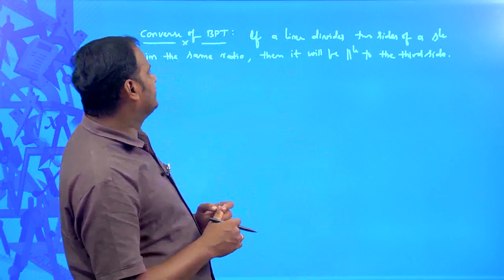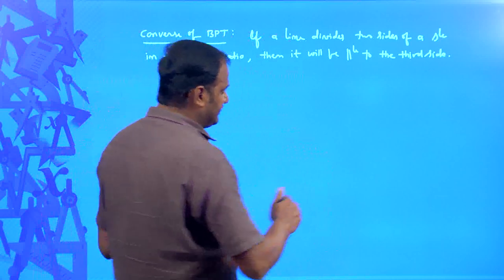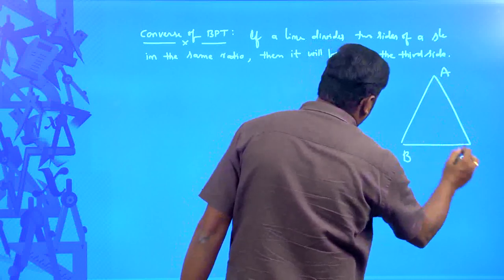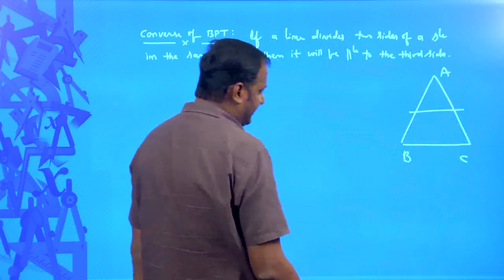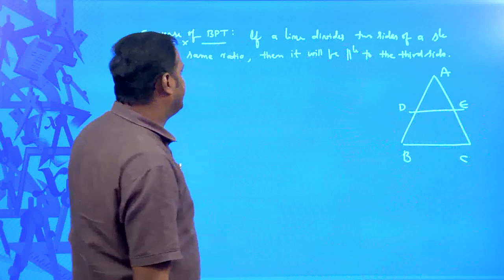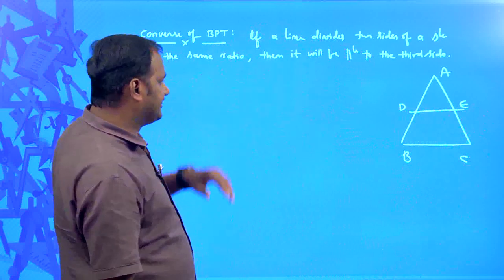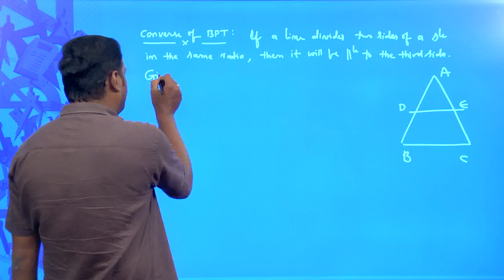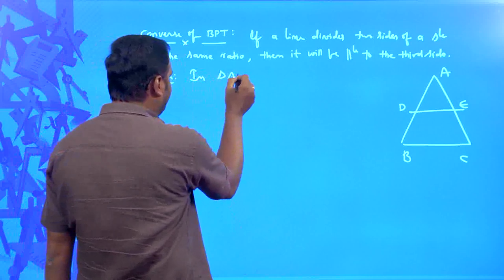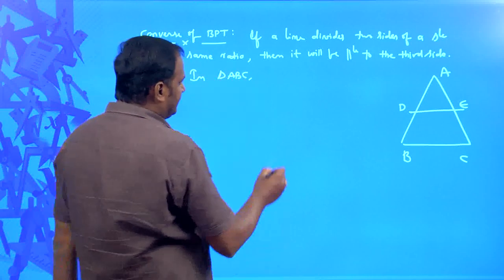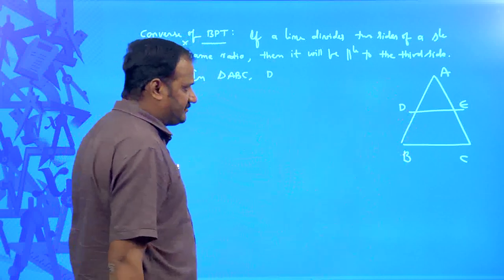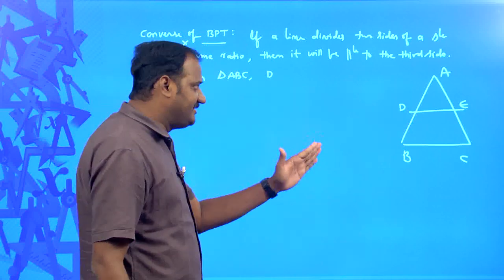Let us draw a figure according to the given statement. I am drawing a triangle ABC. There is a line intersecting AB and AC at two distinct points D and E. What is the information given? In triangle ABC, DE is a line drawn intersecting AB and AC at two distinct points D and E, such that AD by DB is equal to AE by EC.